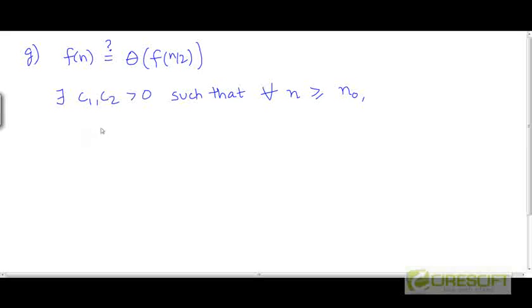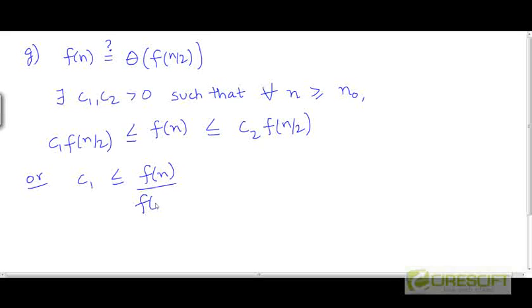f needs to be sandwiched between two constant multiples of f(n/2). Another way to write this is if we divide by f(n/2) throughout, we get the ratio of f(n) to f(n/2) needs to be greater than or equal to c₁ and less than or equal to c₂.